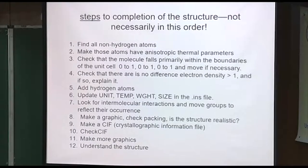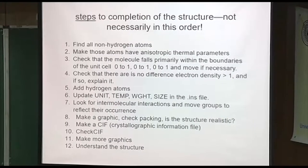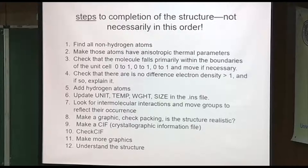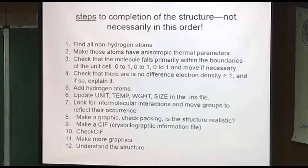I want to go over adding hydrogen atoms a little more today. The UNIT statement — which is the number of atoms in the unit cell of each type — needs to be updated. The LST file will give you some keys about that. Get TEMP in there as early as possible, because it influences the default carbon-hydrogen distances. It's a function of temperature, so if you put it in the file it's going to use the right temperature. Remember, that's in degrees Celsius.